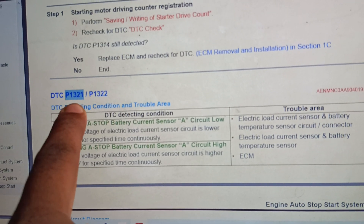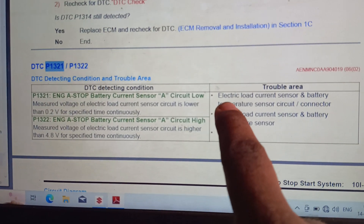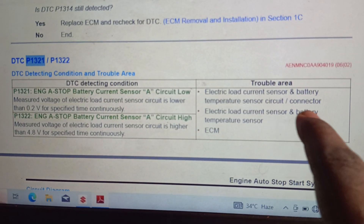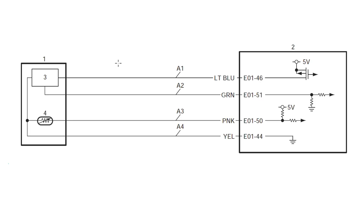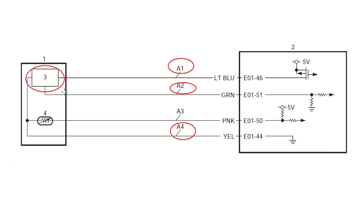Trouble area: electric load current sensor and battery temperature sensor circuit or connector; electric load current sensor and battery temperature sensor, or ECM. Mark the trouble area in the diagram. First, mark circuits A1, A2, and A4 — these three circuits between the electric load current sensor and ECM. Then mark the current sensor. This is the current sensor. In the trouble area, also mark ECM.